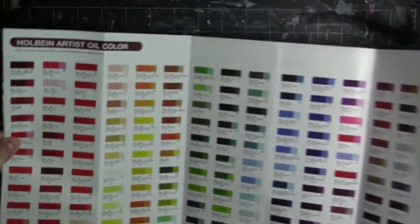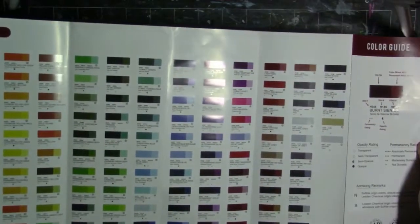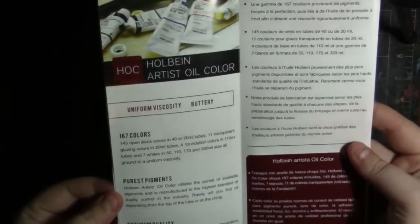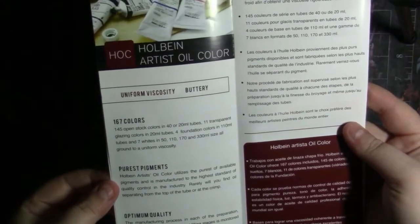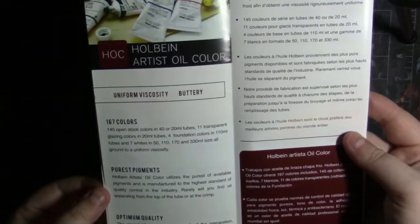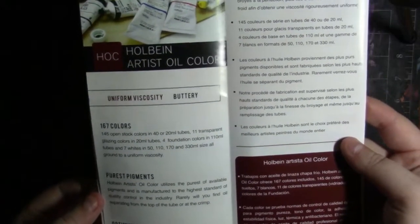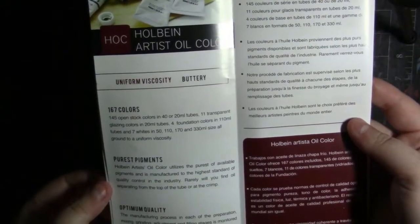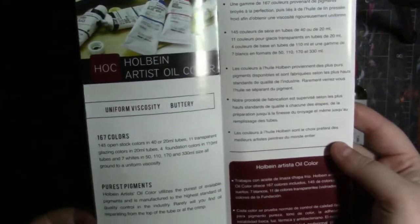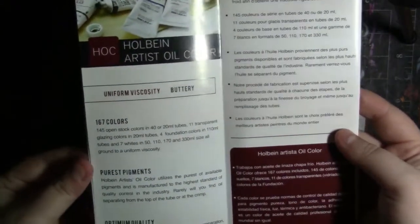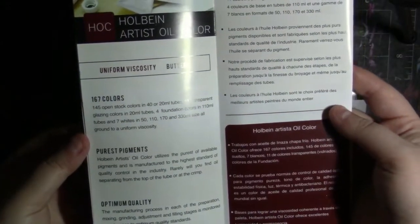And then here is all of the different colors that they make in this line of paints. Then it says there are 145 open stock colors in 40 or 20 milliliter tubes, 11 transparent glazing colors in 20 milliliter tubes, 4 foundation colors in 110 milliliter tubes, and 7 whites in 50, 110, 170, and 330 milliliter sizes. All ground to a uniform viscosity.